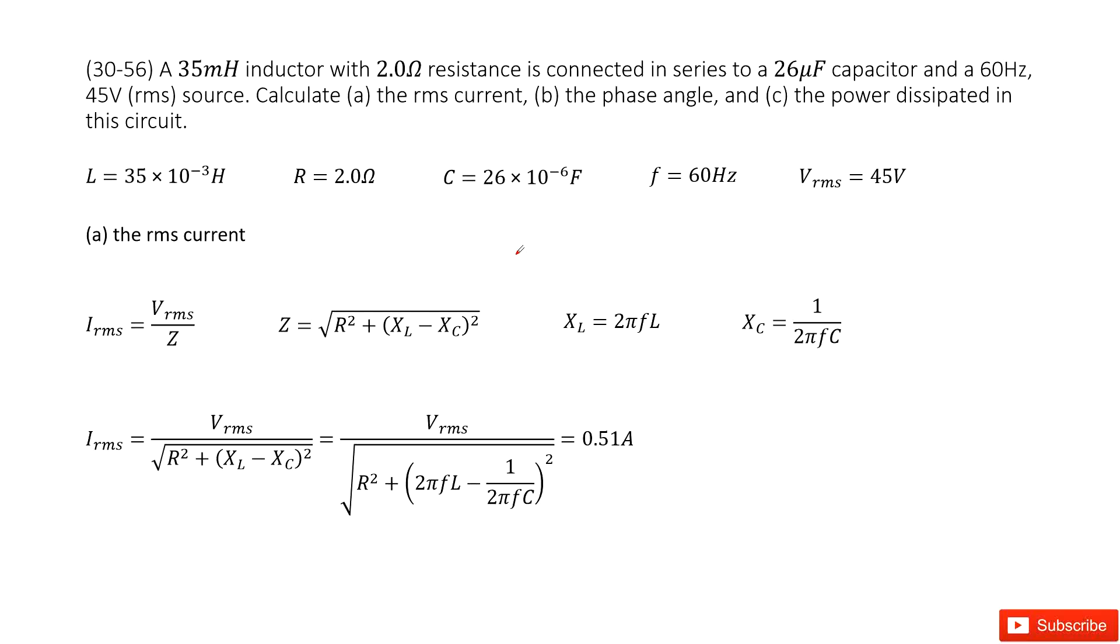There we have an RLC circuit. The quantities for L, R, and C are given, so we can write them there. And then for this circuit, we know the frequency is given, and the root mean squared voltage is given there.